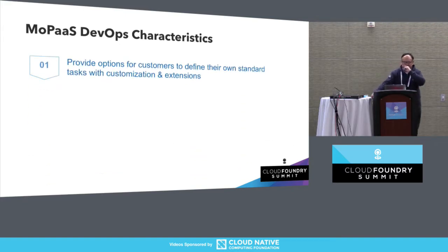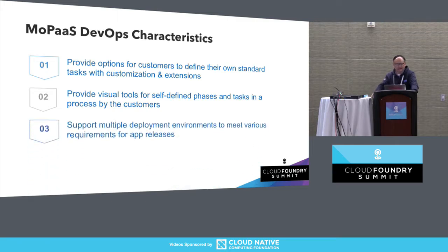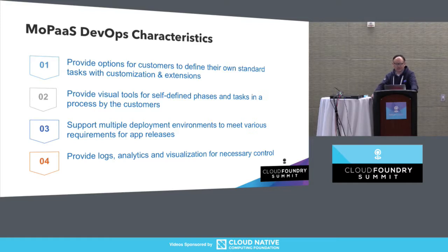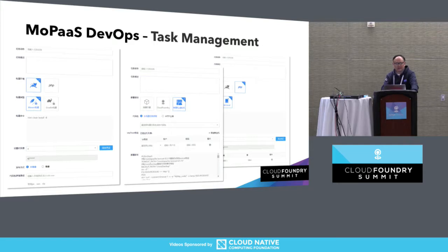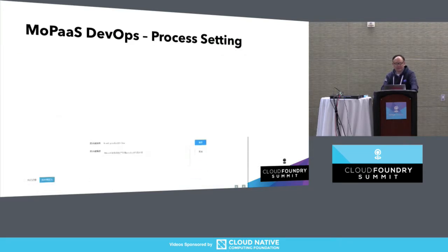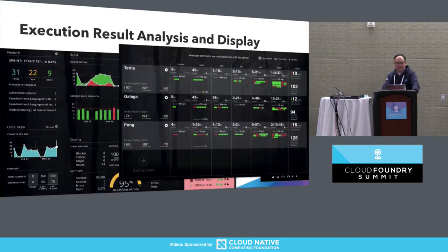In summary, for customizable DevOps, we provide options for the customer to define their own standard tasks with customization and extension. We also provide a visual tool for self-defined phases and tasks in the pipeline, and support multiple deployment environments to meet different requirements for app release. We also provide other necessary tools like log analytics and visualization for control. Those are the UIs for different components — if anyone is interested, we can talk afterwards to schedule a demo.